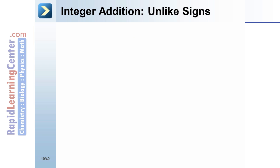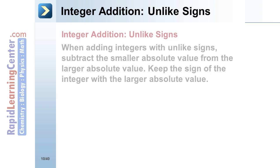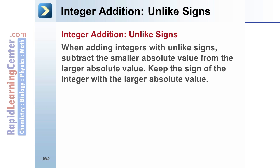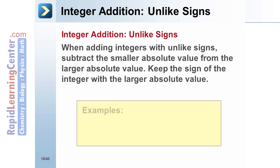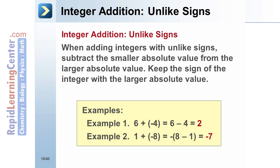Integer Addition — Unlike Signs: When adding numbers with unlike signs, subtract the smaller absolute value from the larger absolute value. Keep the sign of the number with the larger absolute value. Example 1: 6 plus negative 4 equals 2, because the number with the larger absolute value is positive 6. Example 2: 1 plus negative 8 is the same as the opposite of 8 minus 1. Both expressions equal negative 7.